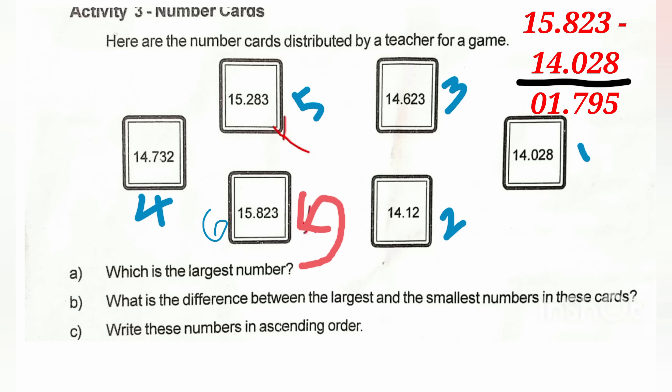A teacher distributed little cards for a game. The question is: which is the largest number? The numbers on the cards are 2.823, 14.082, 14.12, 14.623, 14.732, 15.283, and 15.823. Looking at the numbers, 15.823 is clearly the largest. The difference between the largest and smallest numbers needs to be found.